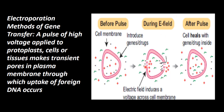The cell develops pores, and the DNA enters inside. The cell heals with the gene or drug inside. A pulse of high voltage is applied to the protoplast, cells, or tissues, which makes transient pores — temporary pores — in the plasma membrane, through which uptake occurs. This is called the electroporation method.